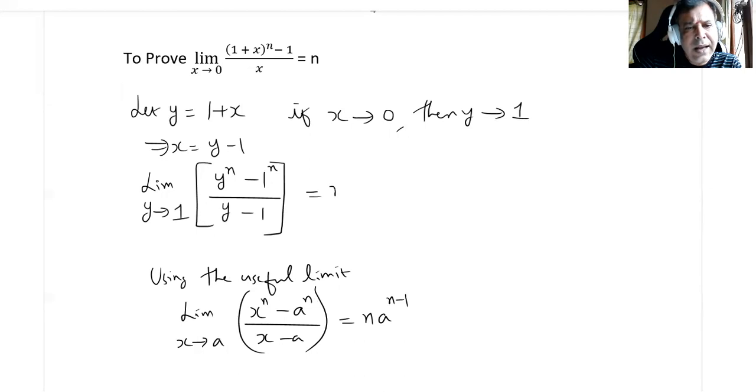This gives us n times 1 to the power of n minus 1. Since 1 to the power of n minus 1 equals 1, we get n times 1, which is n. This is our desired result, hence the proof.